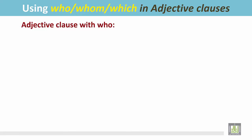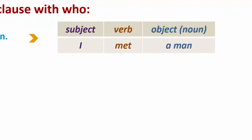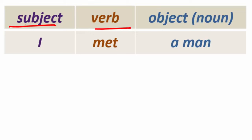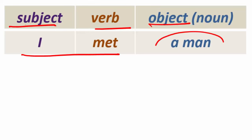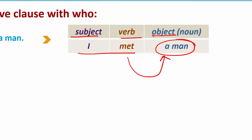Adjective clause with 'who.' See the examples. 'I met a man.' In this sentence, the structure looks like this: the subject, then the verb, and then the object. 'I met' — the object we find is 'a man,' and this is the object for the verb 'met.'